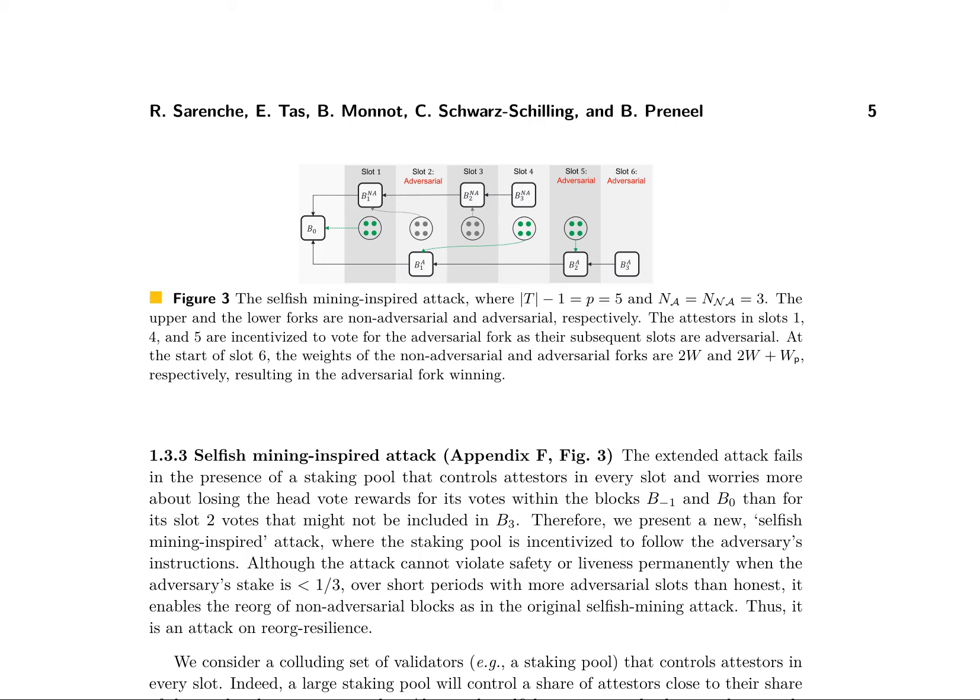DAG Votes decentralize the head vote reward by using a committee of attestors to determine timely votes, making it harder for an adversary to manipulate rewards. This solution also addresses the issue of solo validators losing head vote rewards when the leader is offline. The practical version of this solution is estimated to have a slight overhead and is backward compatible with the Ethereum infrastructure.